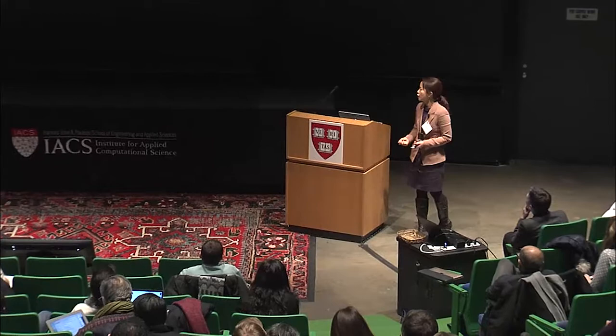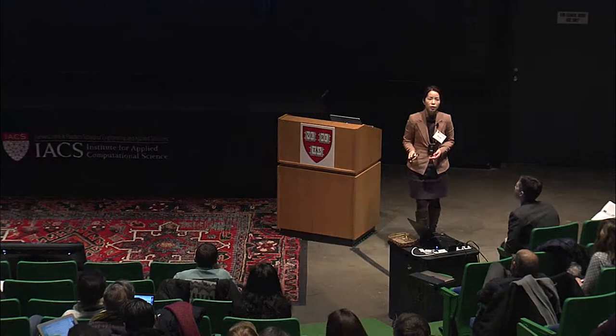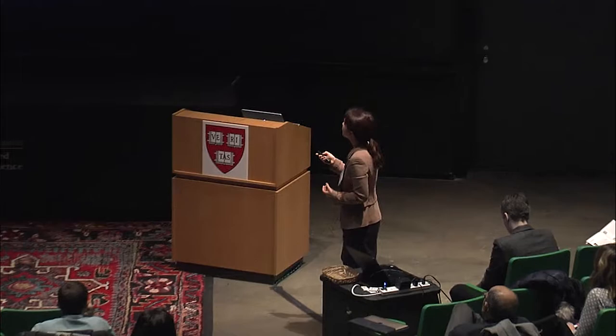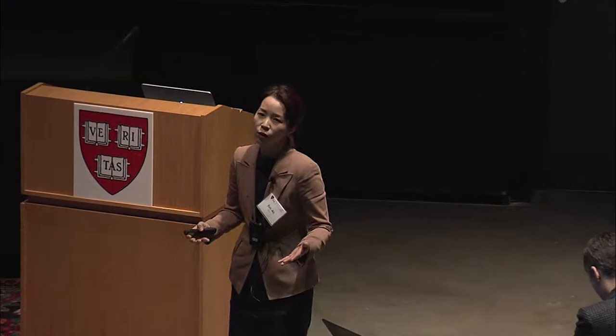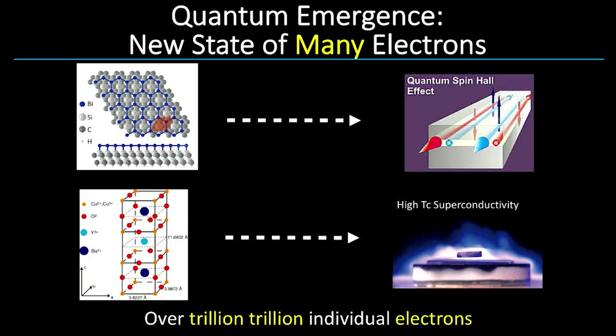But there are challenges. The challenges are that, first of all, trying to understand emergent phenomena of electrons, typically in our material systems, means having to understand trillion-trillion individual electrons. Not hundred thousand, not even trillion, but trillion-trillion. That's really many, big number.